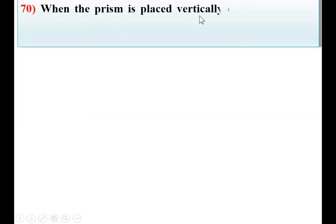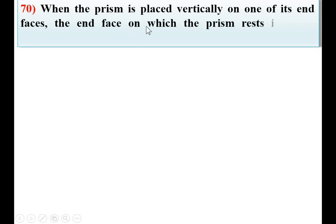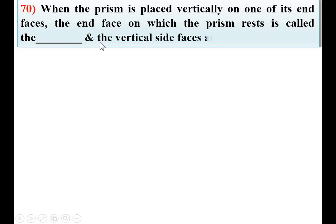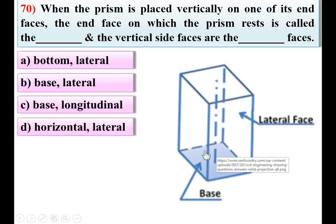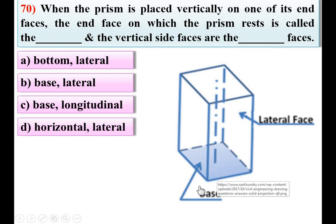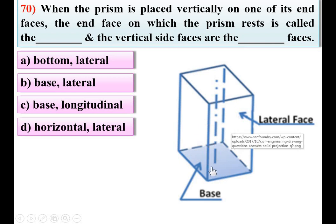Question 70: When the prism is placed vertically on one of its end faces, the end face on which the prism rests is called the blank, and the vertical side faces are the blank faces. Options: A: bottom, lateral; B: base, lateral; C: base, longitudinal; D: horizontal, lateral. The end face on which the prism rests is known as the base, so the first blank is base. The vertical side faces — those four vertical side faces — are known as lateral faces. So the answer is B: base and lateral.